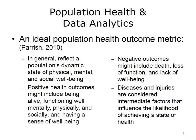What does population health entail for data analytics? The primary concern relates to what kind of metrics are relevant and how they should be accessed. An ideal population health outcome metric, as described in Parrish's 2010 article, has four characteristics. In general, it should reflect a population's dynamic state of physical, mental, and social well-being. Positive health outcomes might include being alive, functioning well mentally, physically, and socially, and having a sense of well-being. Negative health outcomes might include death, loss of function, and lack of well-being. Diseases and injuries are considered intermediate factors that influence the likelihood of achieving health, but are not health itself.